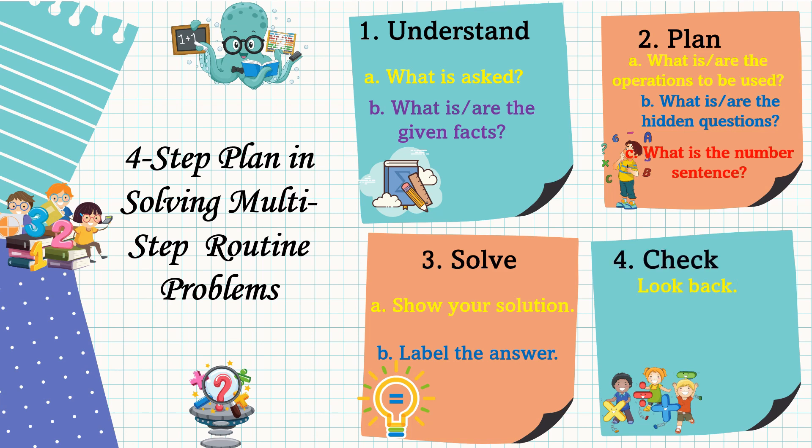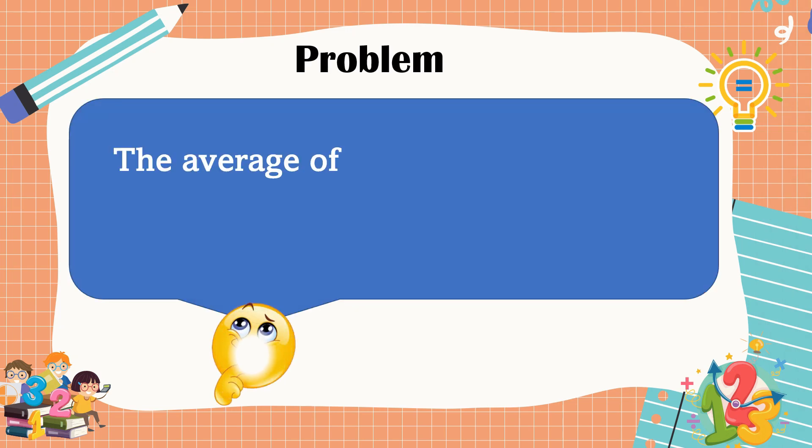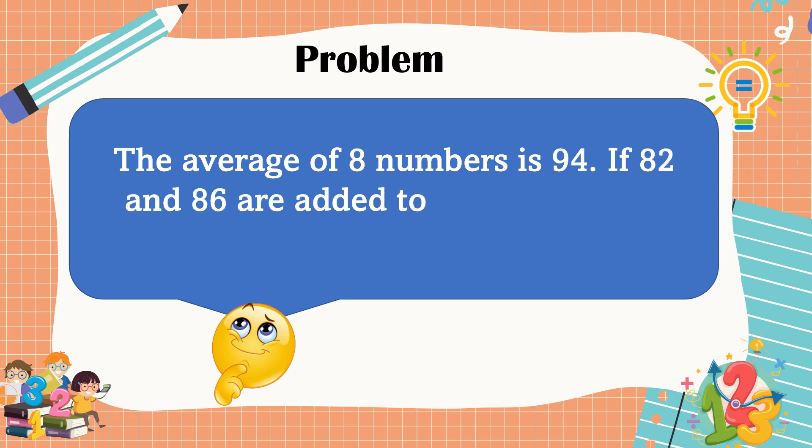Lastly, we're going to check or look back. In checking, go back and check the flow of your computation. This is our first problem: The average of eight numbers is 94. If 82 and 86 are added to the eight numbers, what is the new average?